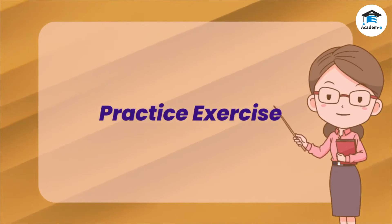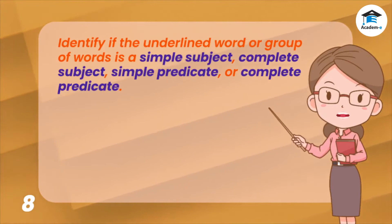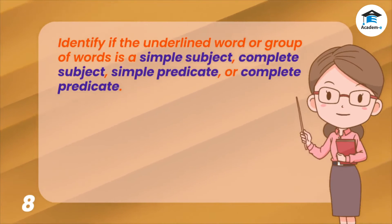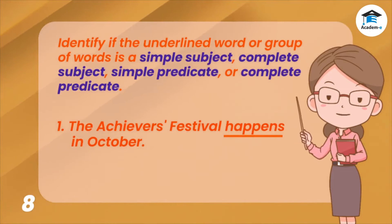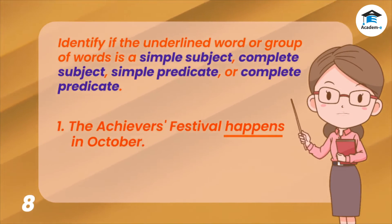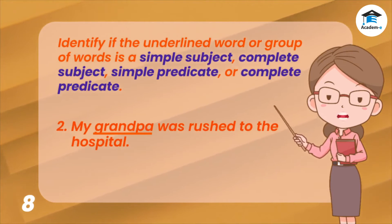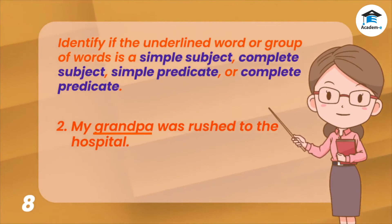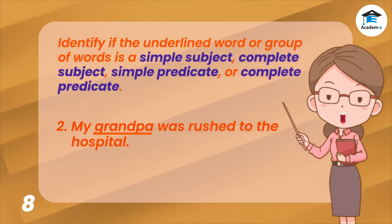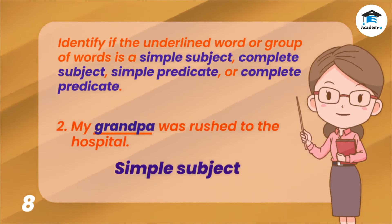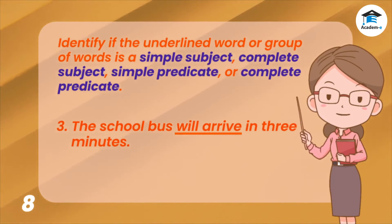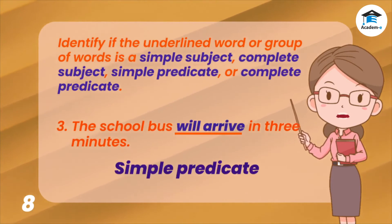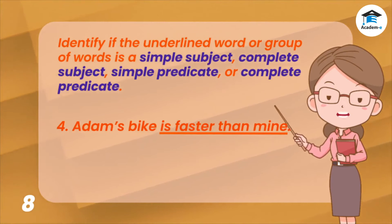Let's practice. Identify the underlined word or group of words as a simple subject, complete subject, simple predicate, or complete predicate. One: 'The achievers festival happens in October.' The correct answer is simple predicate. Two: 'My grandpa was rushed to the hospital.' The correct answer is simple subject. Three: 'The school bus will arrive in three minutes.' The correct answer is simple predicate.